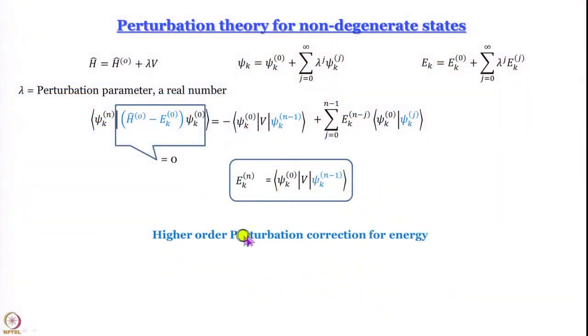This is where we had stopped our discussion; now we will go ahead and finish it in this shorter module. We have obtained an expression for the higher order perturbation correction for energy, and in this expression we have the integral psi_k^0 V psi_k^(n-1). V is going to be dependent on what kind of system we look at — for a harmonic oscillator V will have one form, for a non-rigid rotor it will be something else, for multi-electron atoms it will be electron-electron repulsion, and so on.